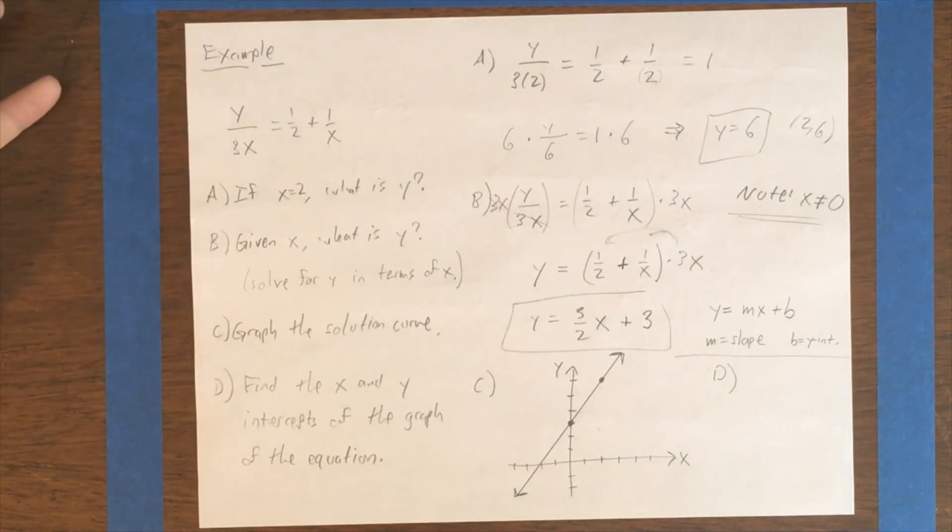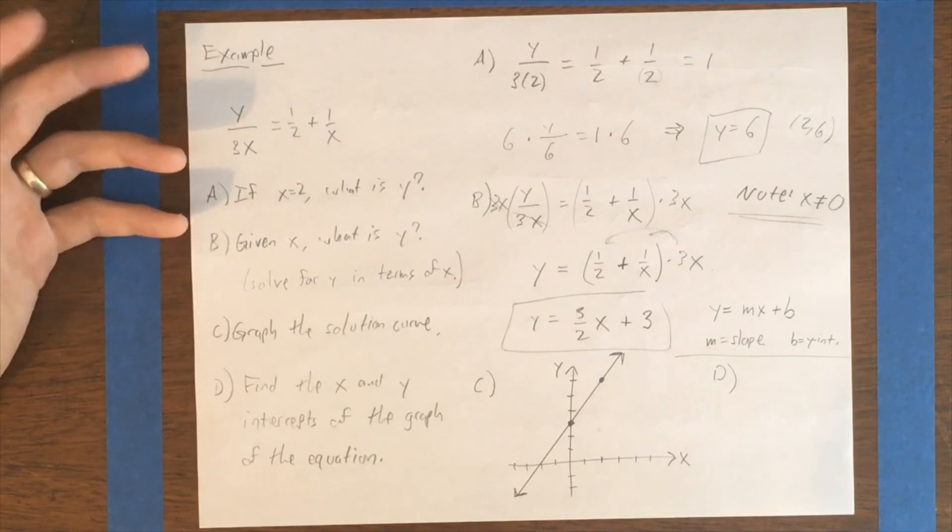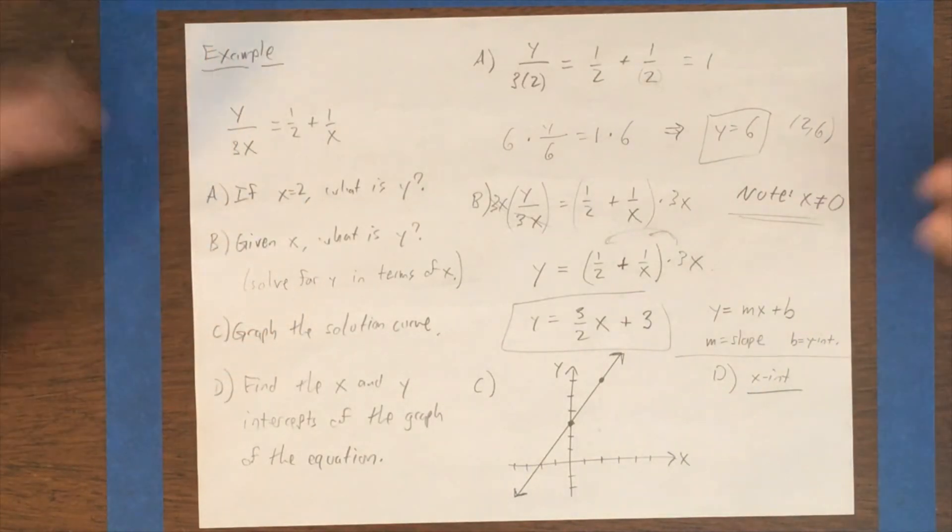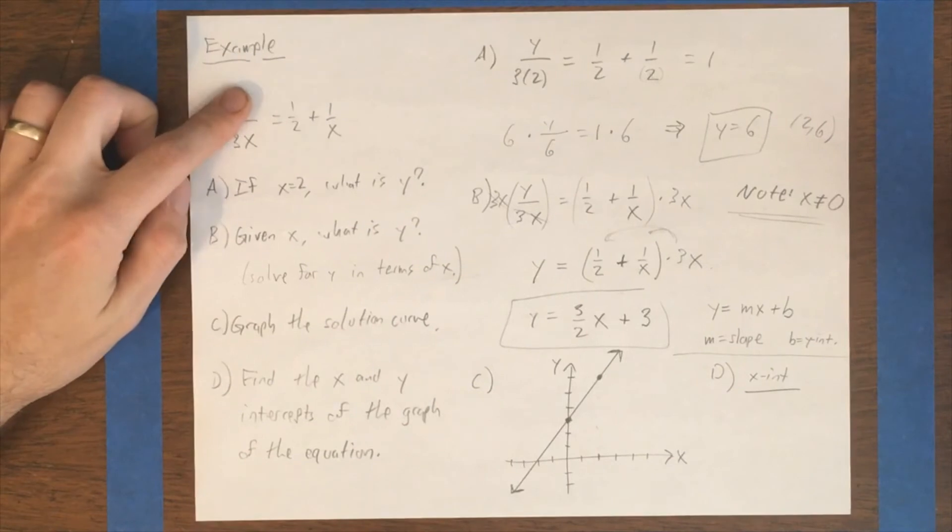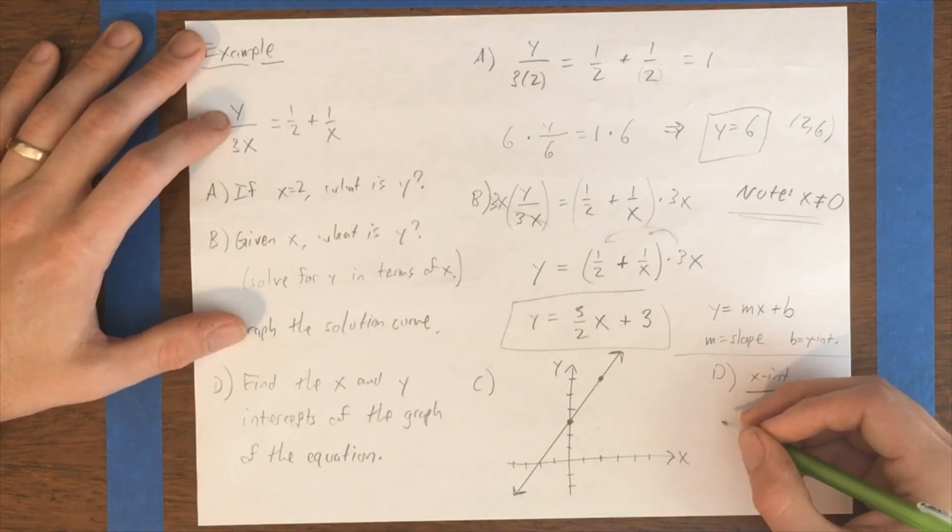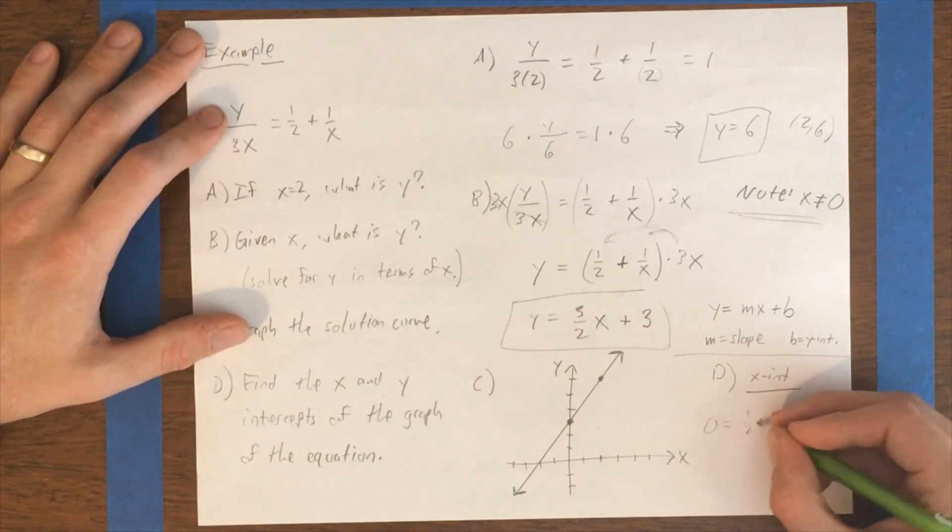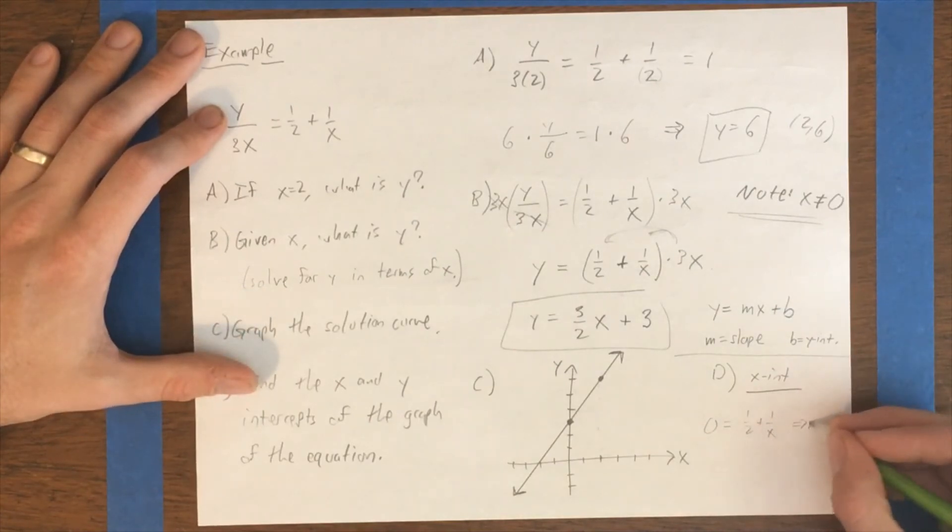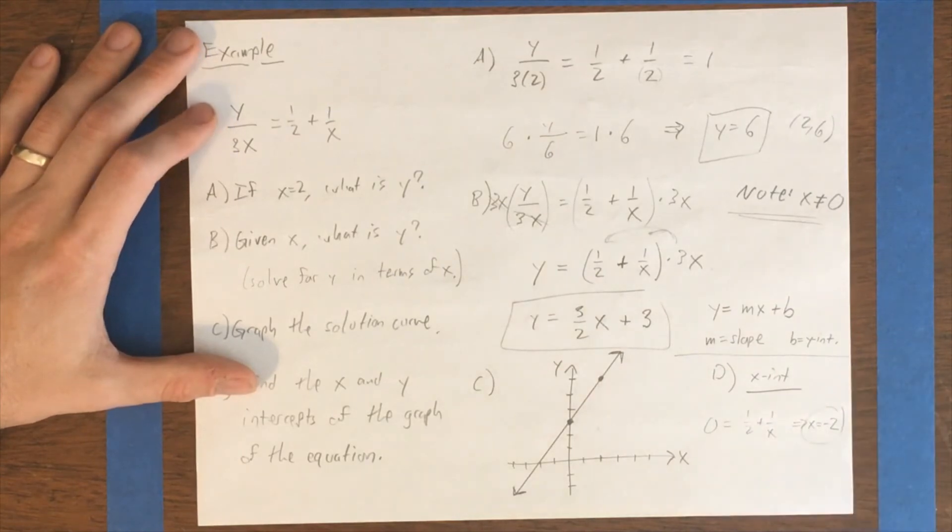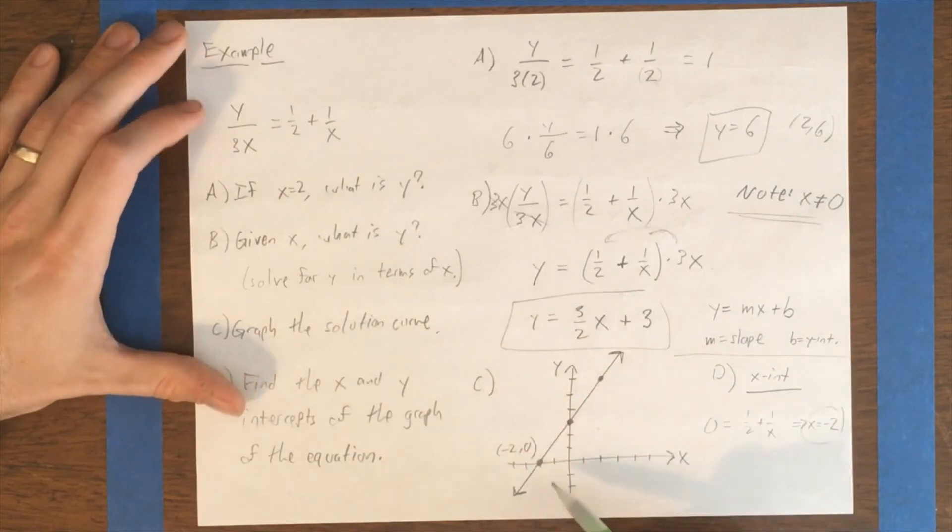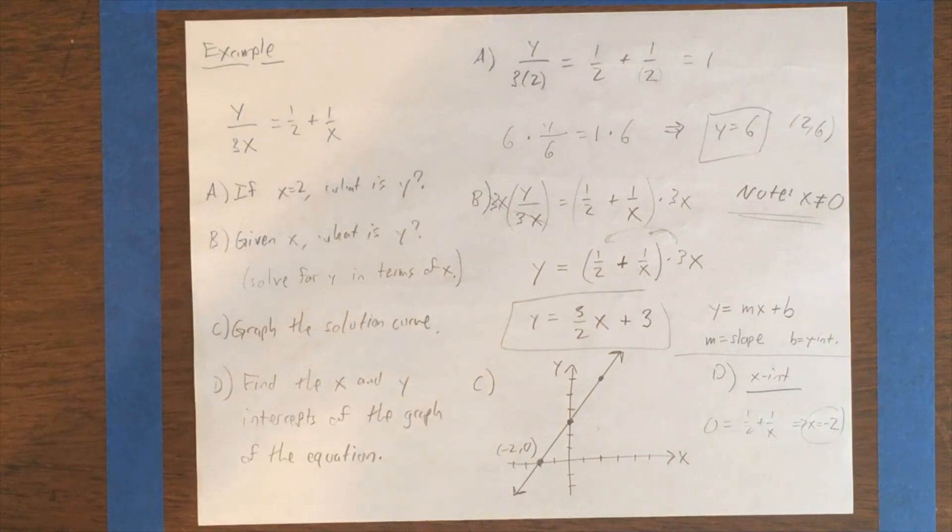X-intercept and y-intercept. Of course, we can find these by substituting in 0 for one variable or the other. The x-intercept in this graph, you would obtain it by substituting in 0 for y. If 0 is y, then you just end up with a 0 on the left-hand side. 0 divided by 3x is going to be 0 equals 1 half plus 1 over x. And solving this for x, you can see that what we need here is really 1 half minus 1 half. So x is going to have to equal negative 2. So that means our x-axis intercept is right over here at (-2, 0), which looks correct given the graph we came up with in Part C.